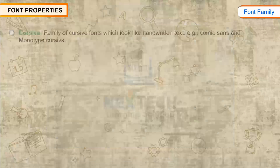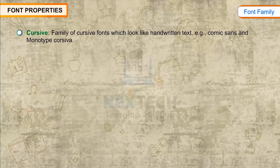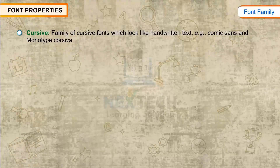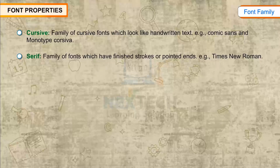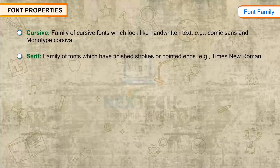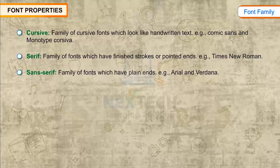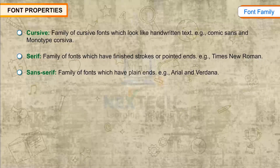For example: Cursive — a family of cursive fonts which look like handwritten text, like Comic Sans and Monotype Corsiva. Serif — a family of fonts which have finished strokes or pointed ends, like Times New Roman. Sans-Serif — a family of fonts which have plain ends, like Arial and Verdana.